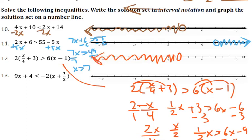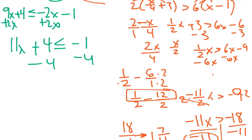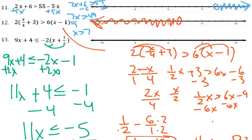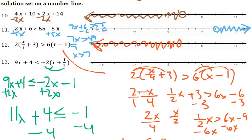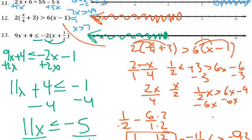Our last problem: distribute negative 2 times x as -2x, and negative 2 times one-half as negative 1. Combined with 9x + 4 and adding 2x gives 11x + 4 ≤ -1. Subtract 4: 11x ≤ -5. Divide by 11: x ≤ -5/11. That's a little less than 0.5 in absolute value, so just past the negative half mark. It has the equal-to sign, so I fill in the circle, and x is less than or equal to -5/11, shading to the left. And we are done.